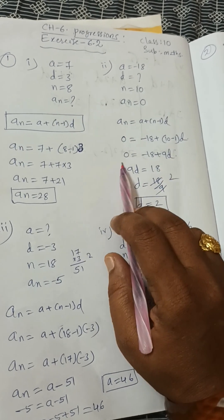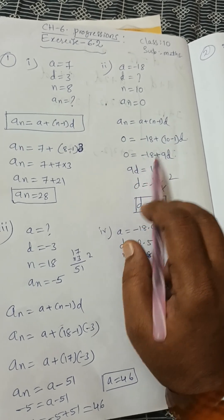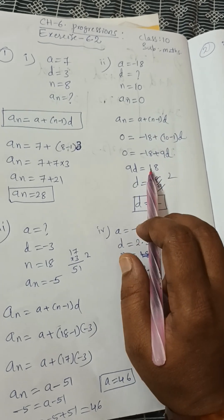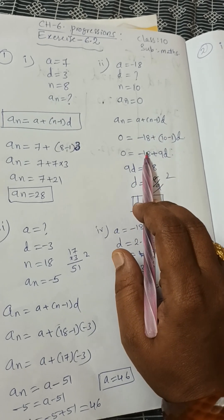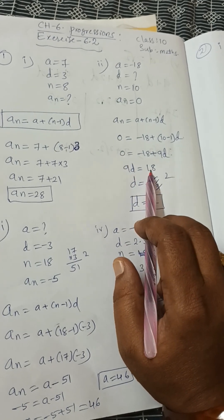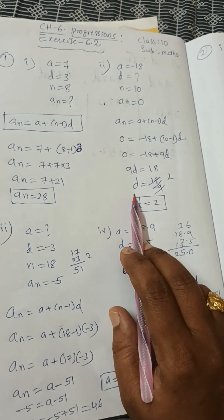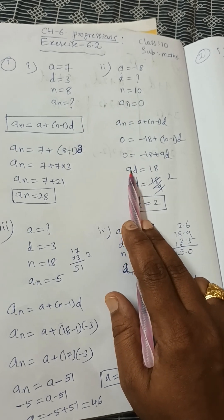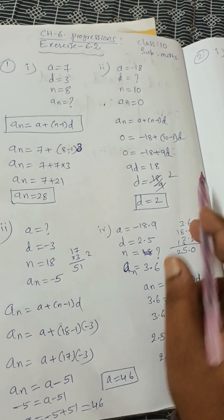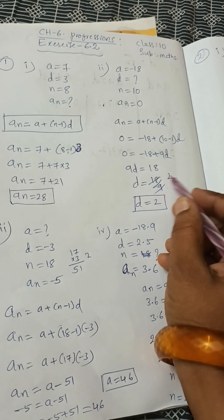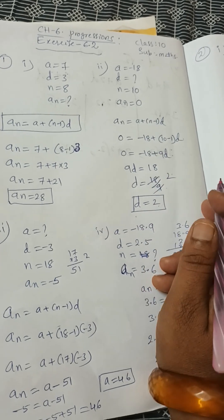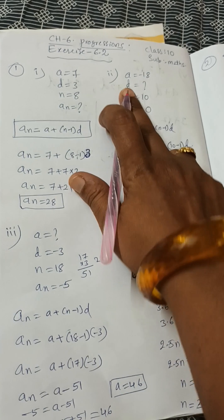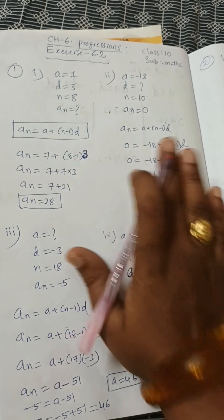So 0 = −18 + 9d, which gives 9d = 18. Transposing, d = 18 ÷ 9 = 2. So the common difference d = 2 for the second bit of the table.